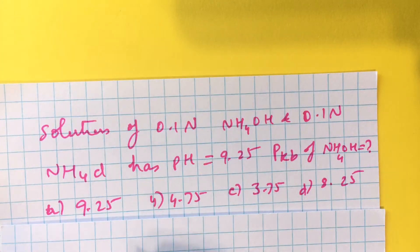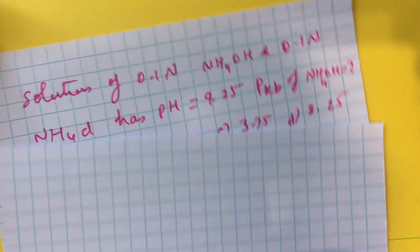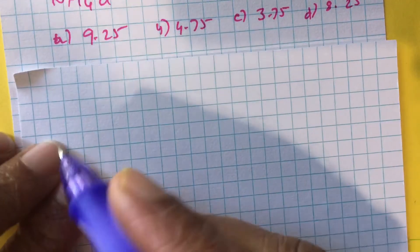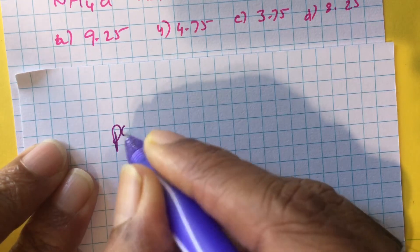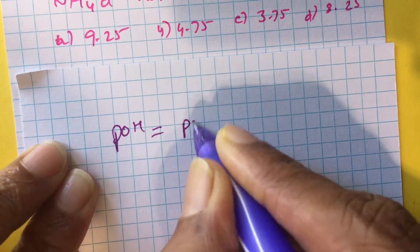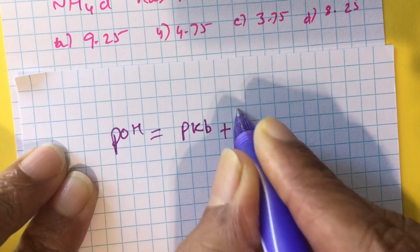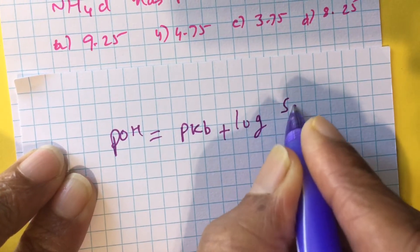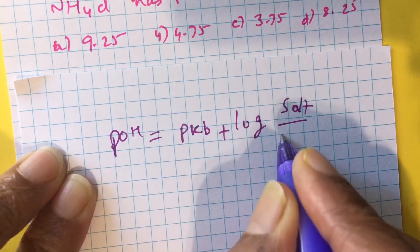To solve this problem, we invoke the Henderson equation. pOH is equal to pKb plus log of salt by base.